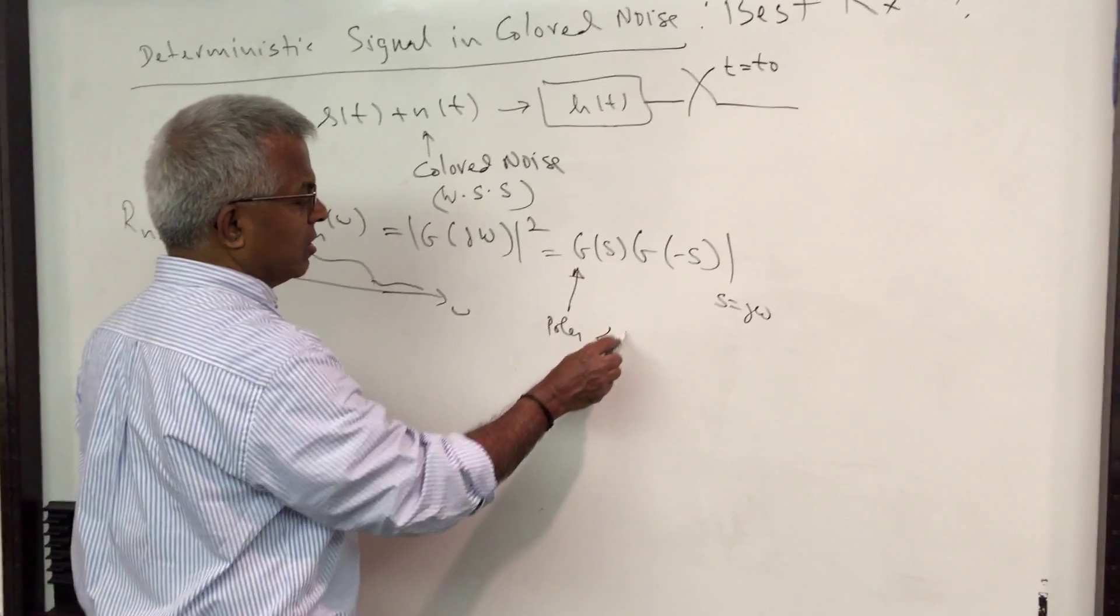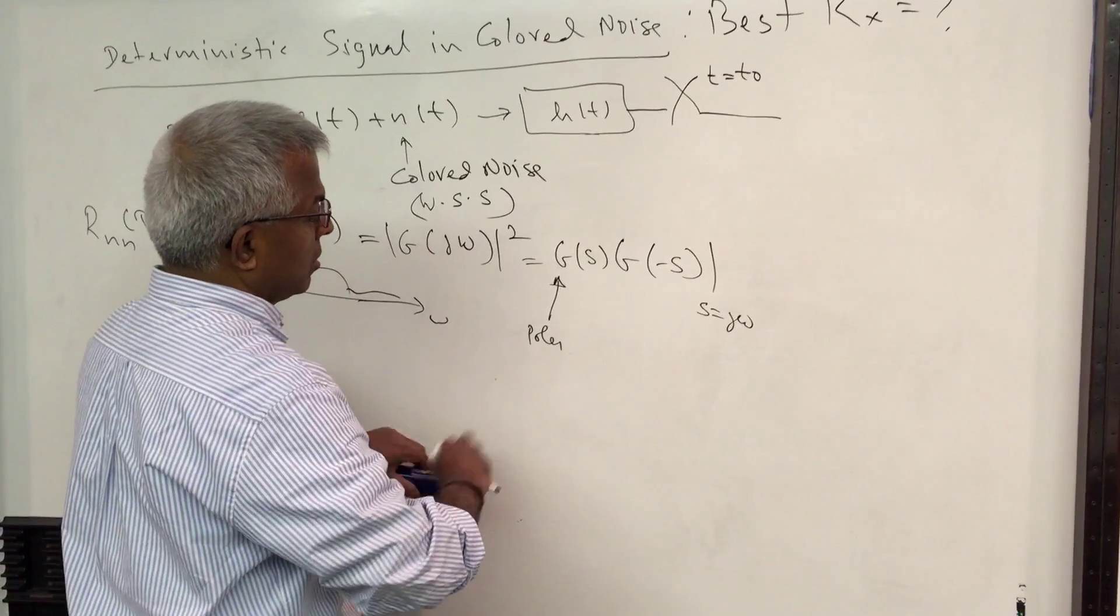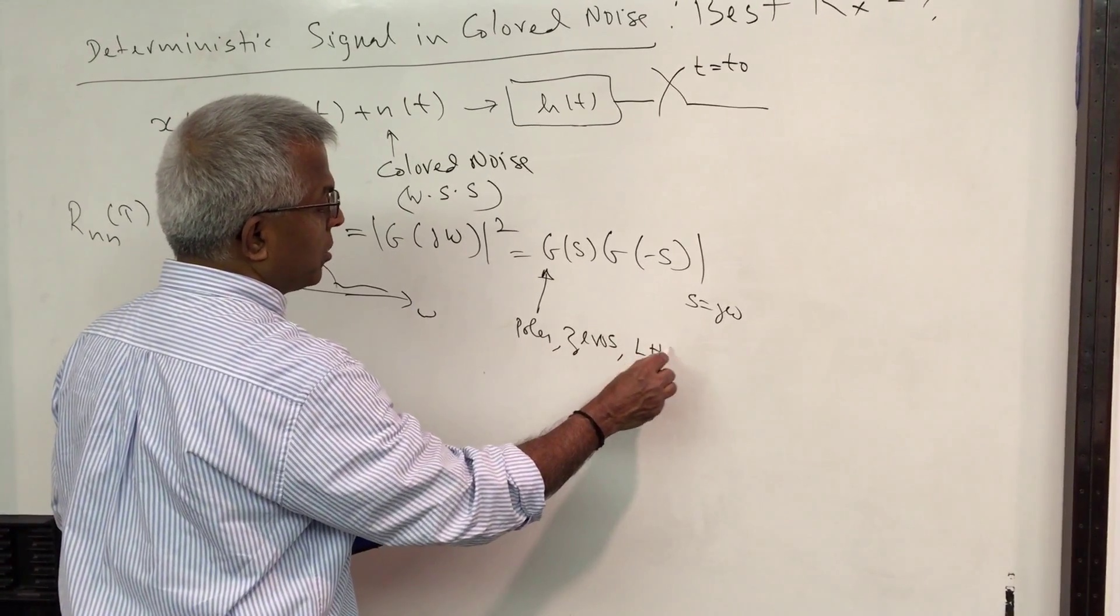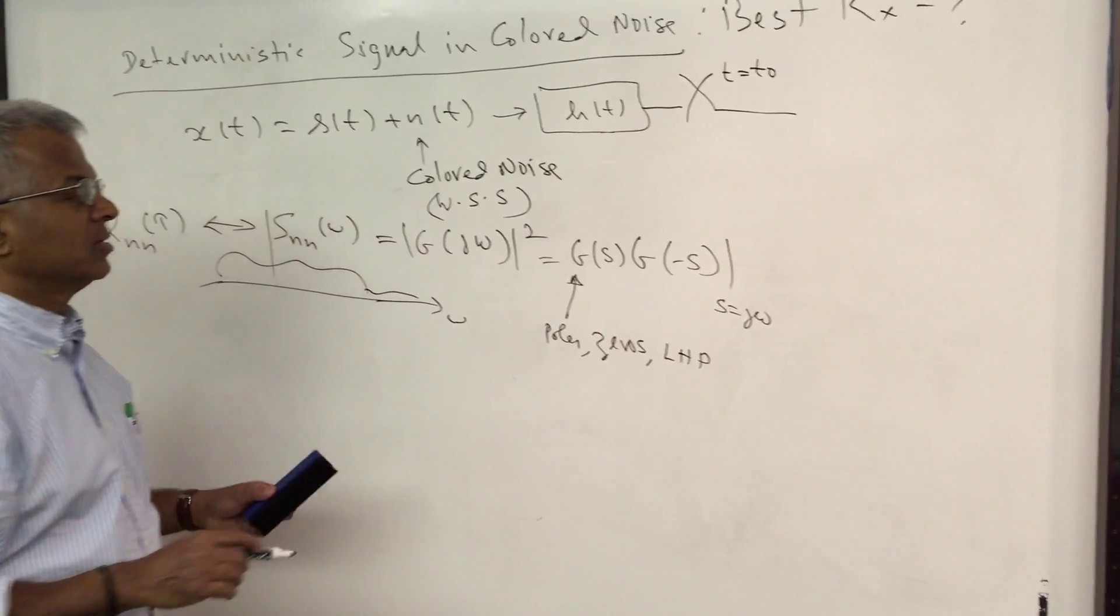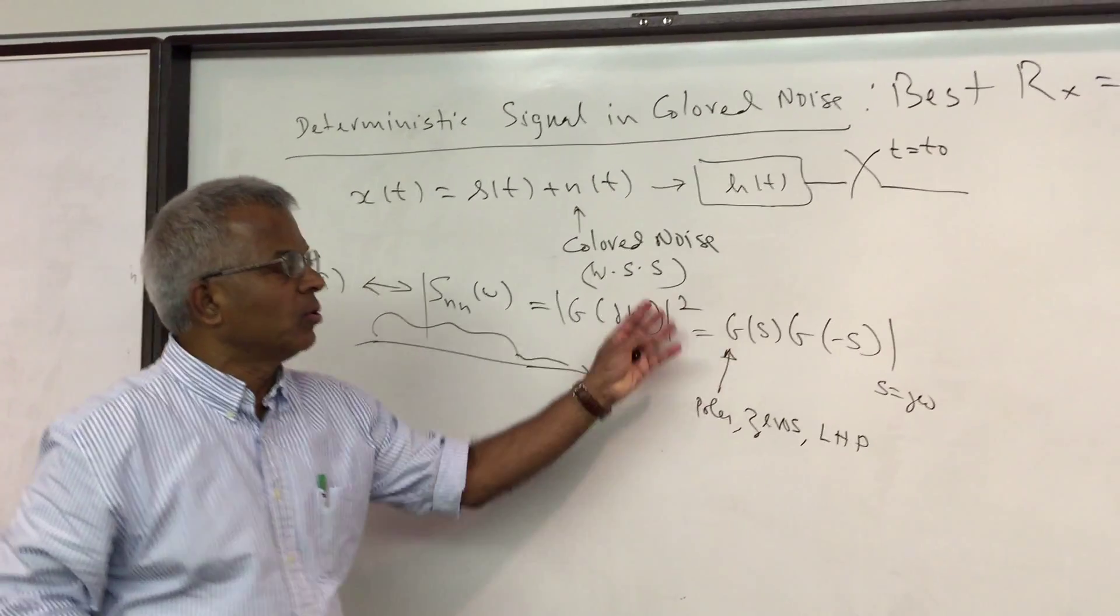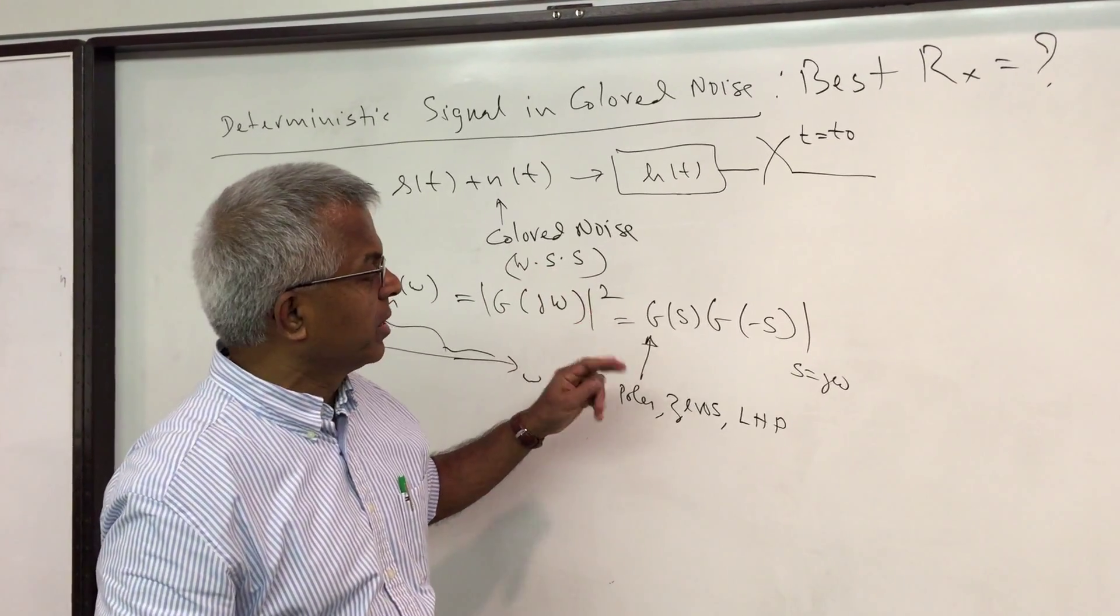So it's possible to - bottom line is it's possible to factorize the poles and zeros so that you have equal number. To start with you have equal number on both the planes.